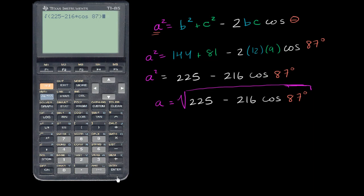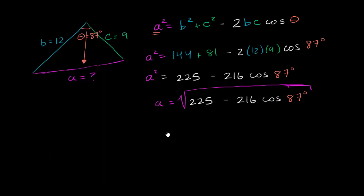And we deserve a drum roll now. This is going to be 14.618. Say we want to round to the nearest tenth just to get an approximation. It would be approximately 14.6. So a is approximately equal to 14.6, whatever units we're using, long.